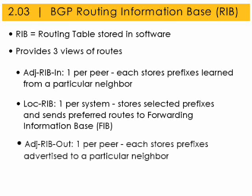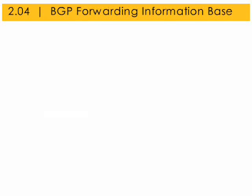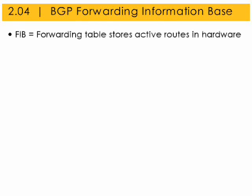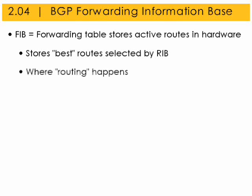The adjacent RIB-Out, of which there is one per peer, stores prefixes advertised to a particular peer. The BGP Forwarding Information Base, or FIB, is the active routing table that is stored in hardware. The FIB stores the best routes as selected by the routing information base and processes the route lookup. This is where routing happens.